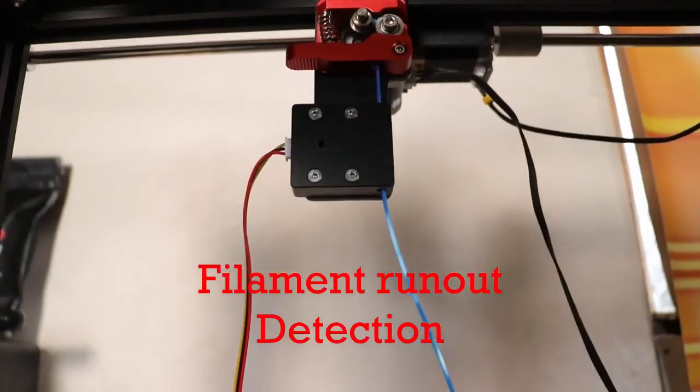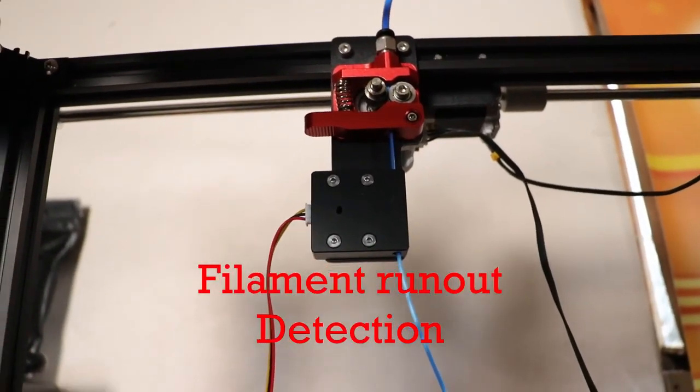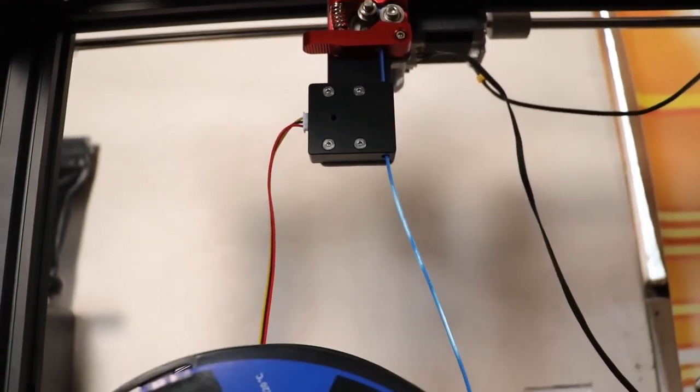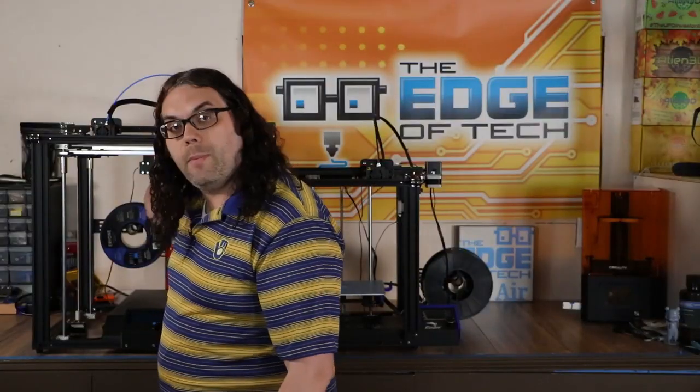One thing to note on the Ender 5 Plus, it does come with factory filament runout detection, so if your filament gets cut or stops coming through, you'll be able to fix the filament or change your filament if you ran out and then continue the print. That's a really cool feature. I love filament runout for those long prints, especially on a big machine like this.